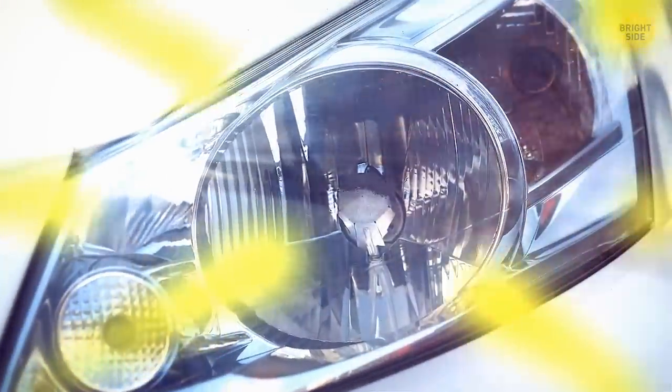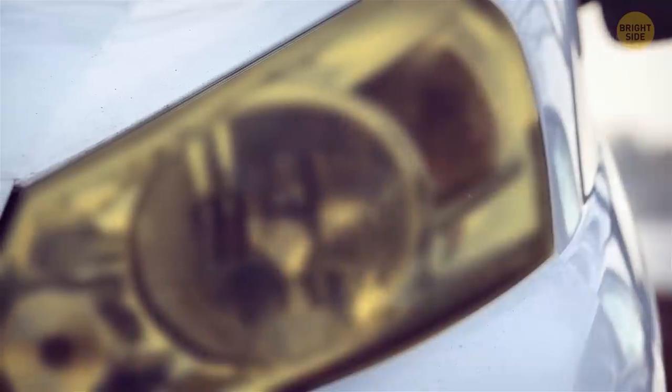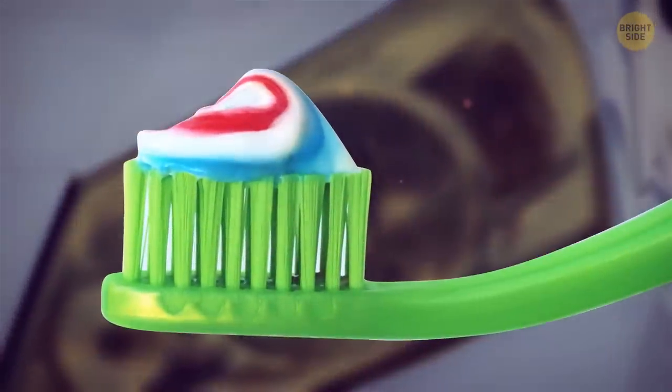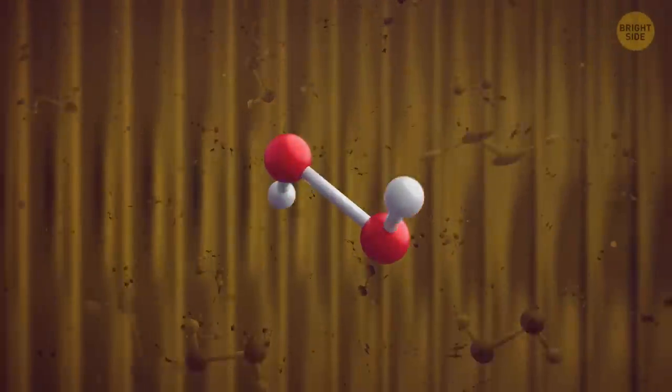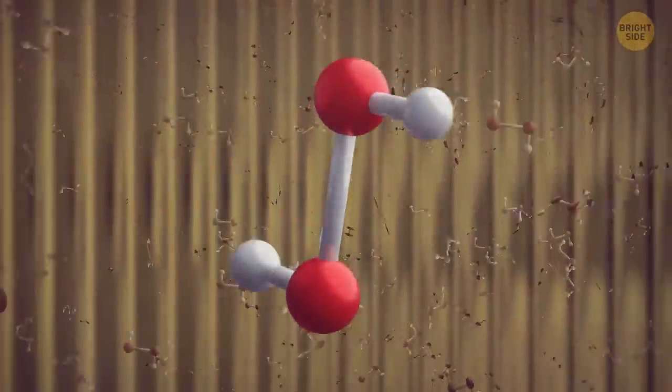The sun's rays then damage it even more, causing it to turn yellow and foggy, making it harder for light beams to escape. An easy way to clear those lights back to their former glory is by using toothpaste. The hydrogen peroxide in it will help remove the foggy buildup on the light.